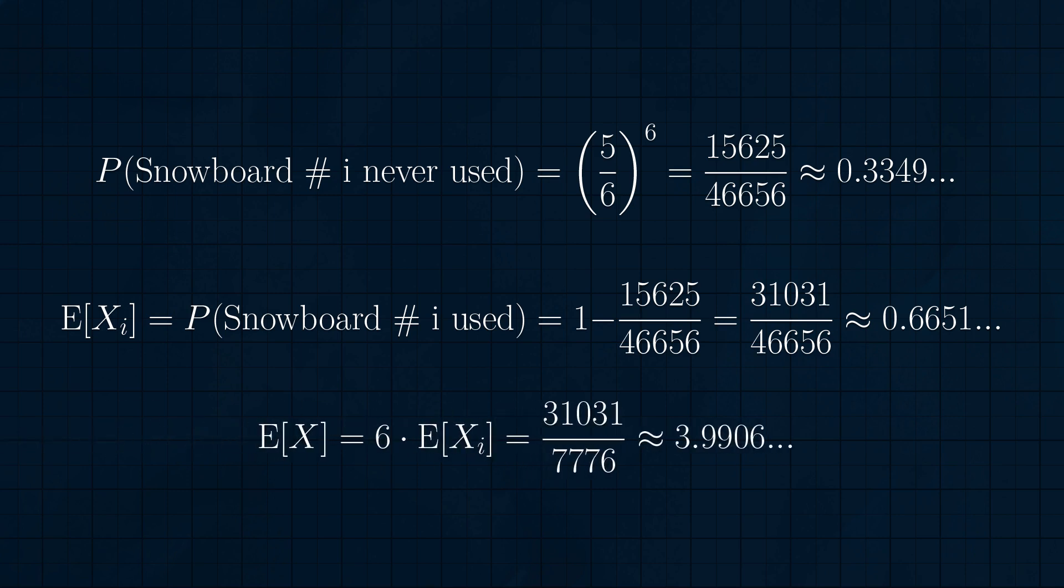Since all the snowboards have the same probability of being used, the expected total number of snowboards used is 6 times the expected value of x sub i, or about 3.9906. So, on average, she has to sharpen very slightly less than 4 snowboards each week.